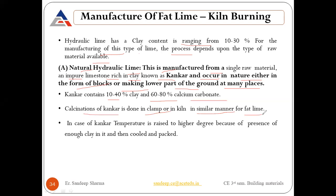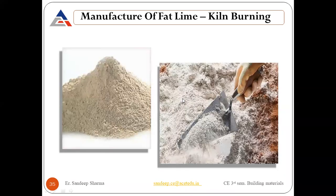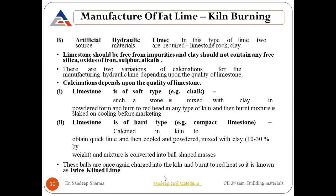Just as fat lime is obtained from kiln burning, lime is obtained from kunker after burning in the clamp and kiln. In the case of kunker, temperature is raised to a higher degree because of the presence of enough clay in it, and then it is cooled and packed. We burn up to a higher degree. Then we have artificial hydraulic lime.